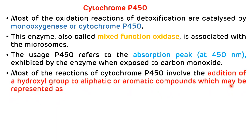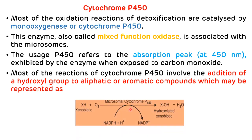Most of the reactions of the cytochrome P450 involve the addition of a hydroxyl group. This is the picture showing the conversion of a xenobiotic to the hydroxylated xenobiotic by the microsomal cytochrome P450 enzyme, which is NADPH dependent. This NADPH is derived from the HMP shunt pathway, which is the hexose monophosphate shunt pathway.